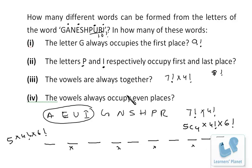So we discussed five cases in this question: without any condition, G always occupies the first place, P and I occupy first and last place, vowels are together, and vowels occupy even places. I hope your concept is clear and your answers are matching with mine.